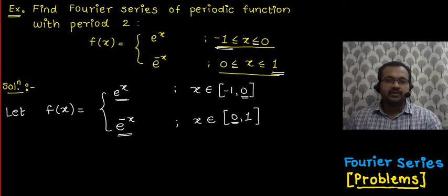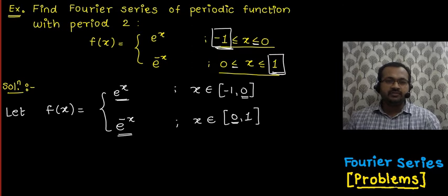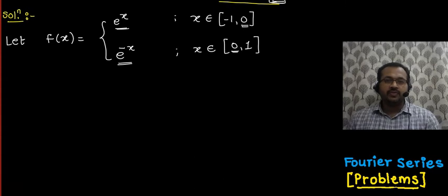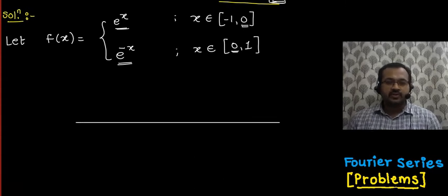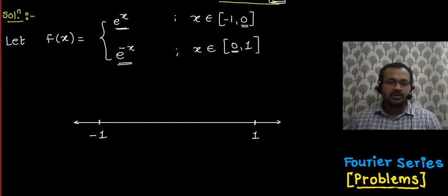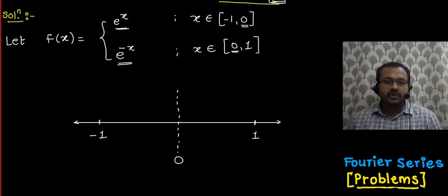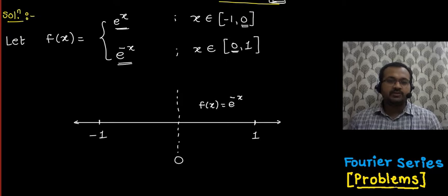Now let's check whether this f(x) is an even function, odd function, or neither even nor odd over the interval minus 1 to 1. For checking, we consider the representation of the function on the real line. Mark the point minus 1, plus 1, and 0 in the middle. In the range 0 to 1, f(x) is defined as e raised to minus x.